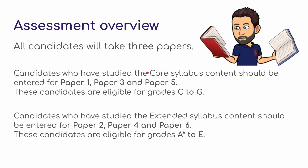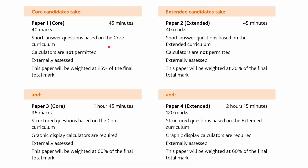All candidates, whether doing core or extended, will take three papers. Candidates studying the core syllabus will be entered for Paper 1, Paper 3, and Paper 5, targeting grades C to G. Candidates studying the extended syllabus will sit Paper 2, Paper 4, and Paper 6, ranging from A* to E. The core Paper 1 is the same as Paper 2 in that both are non-calculator papers, both run for 45 minutes, and are both worth 40 marks.